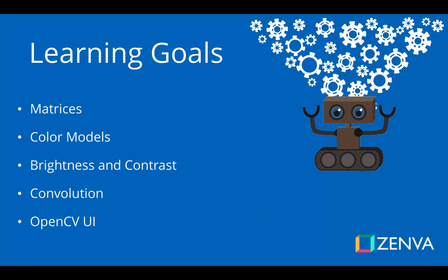We'll be talking about one of the more fundamental operations we can do to an image, and that is changing the brightness and the contrast. We'll also talk about something a little more advanced: convolution. It's really important to understand image convolution well, and that's also how we can apply different kinds of filters. Finally, we'll talk a little bit about the OpenCV UI and how we can get those sliders all set up.